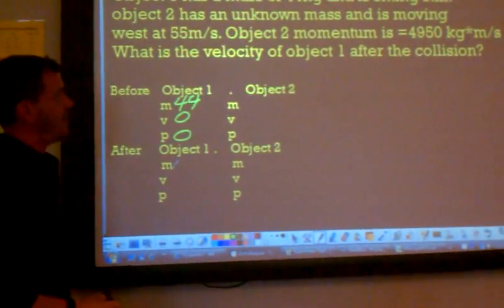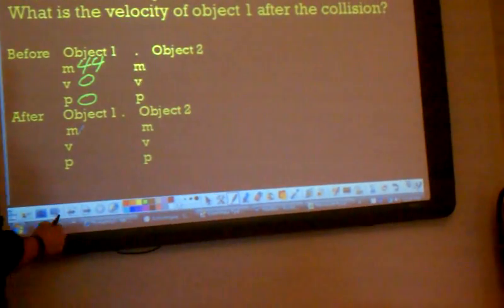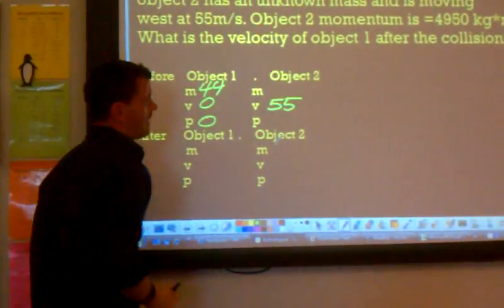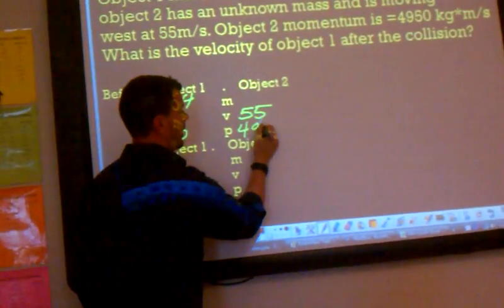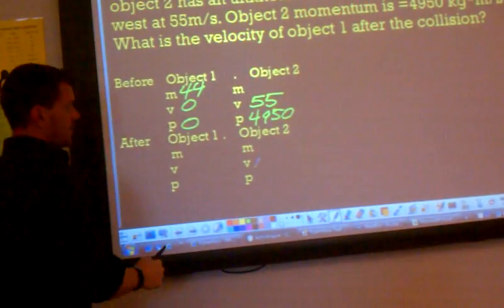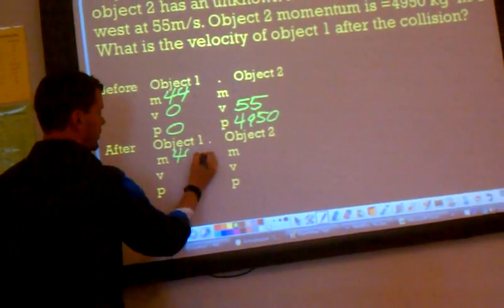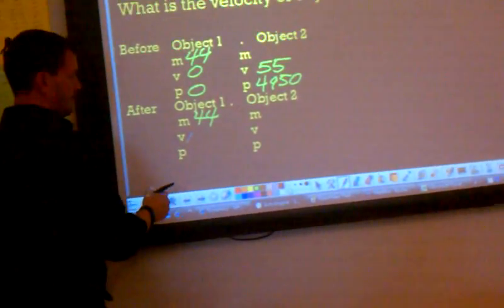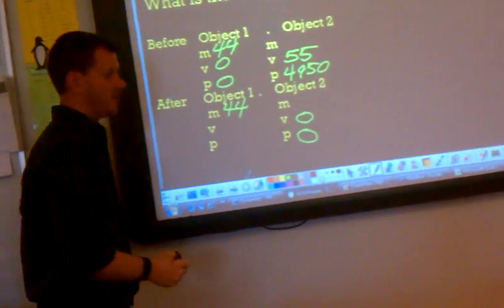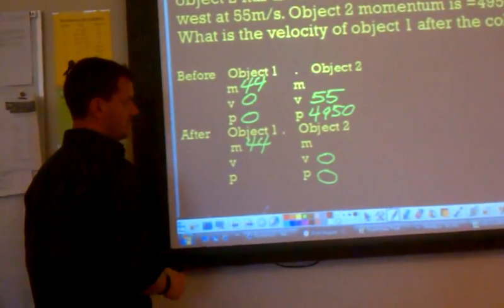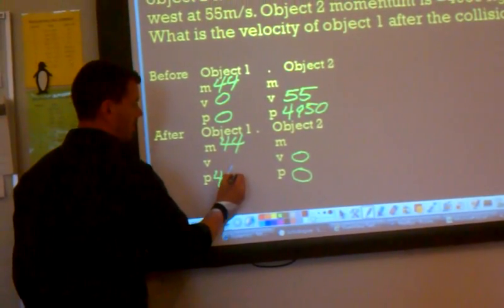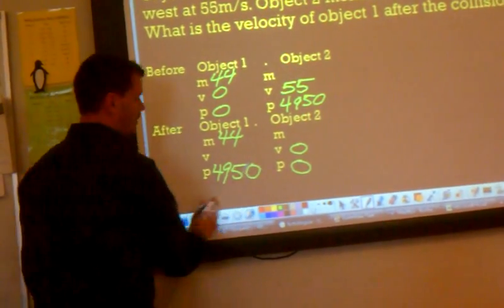Object two has an unknown. Object two has an unknown mass and is moving west at 55 meters per second. Object two is moving at 55 meters per second. It has the momentum of 4950. The masses will stay the same afterwards. The velocity later will be zero for object two. So its momentum will be zero.